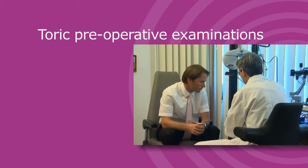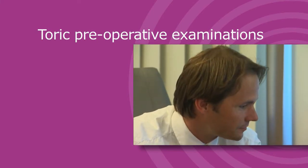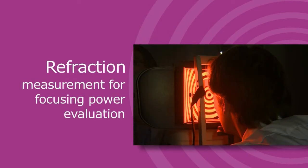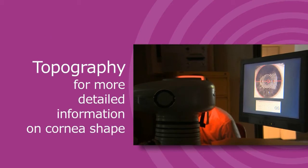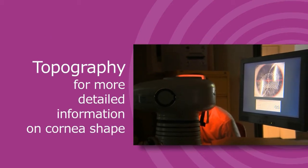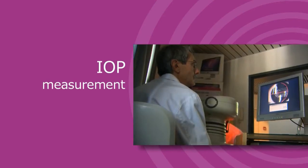A few weeks before going under surgery, some precise tests should be conducted to allow the ordering of the required toric lenses. These are a precise measure of refraction to evaluate the focusing power of the eye, the measurement of the curvature of the cornea through keratometry, a topography providing more detailed information of the shape of the cornea, and a measurement of intraocular pressure.